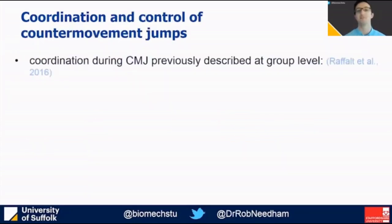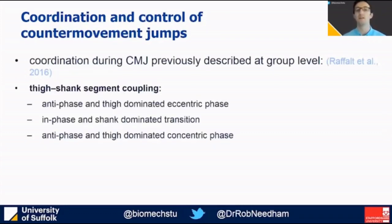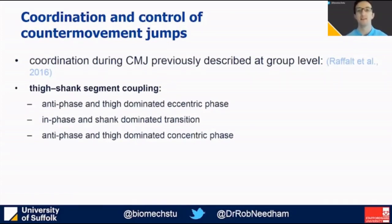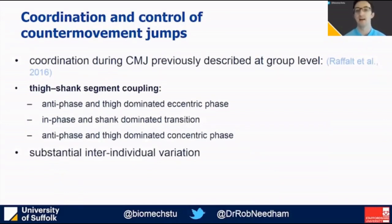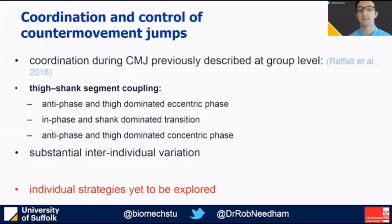Previously during counter-movement jumps, coordination has been described at the group level. At the thigh-shank couple, papers have reported an antiphase and thigh-dominated movement throughout the majority of the eccentric and concentric phases, but with an in-phase shank-dominated transition. However, despite substantial inter-individual variation in results particularly around movement initiation and the transition between phases, the individual strategies leading to this variation are yet to be explored. So our aim was to do exactly that.